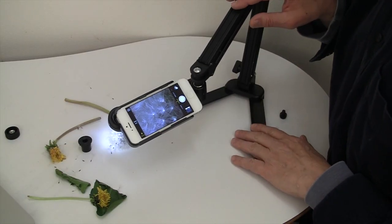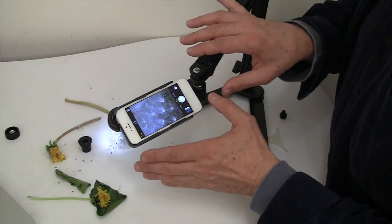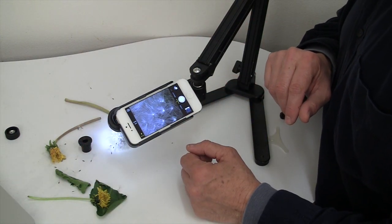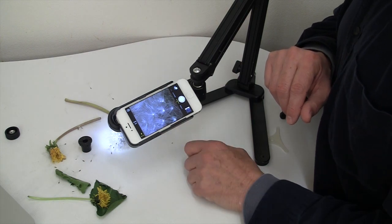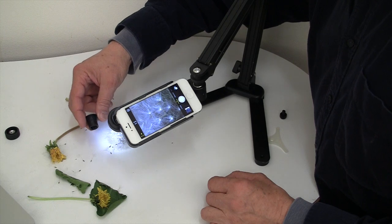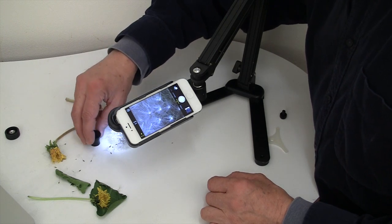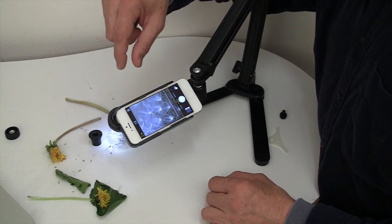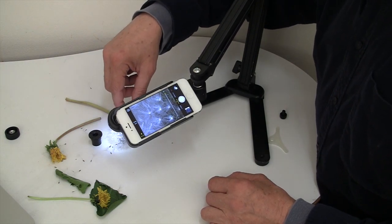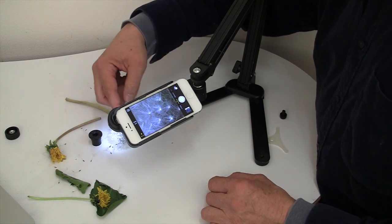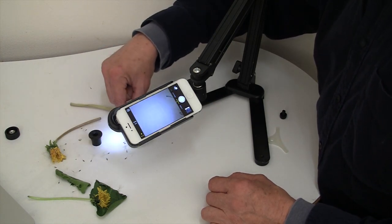So here I am with the ProScope stand attached to our ProScope MicroMobile, using the direct LED lights right onto this dandelion. And I'm not using the ProScope 20-80x lens. I'm just using the Apple camera, and I find that if I zoom, I can get 10 power out of this.